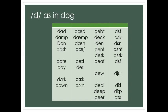D as in dog. We start with the letter A: dat, camp, den, dash, date, day, dark, dawn. That, deck, den, tent, desk, def. Do, deal, deep, dear.